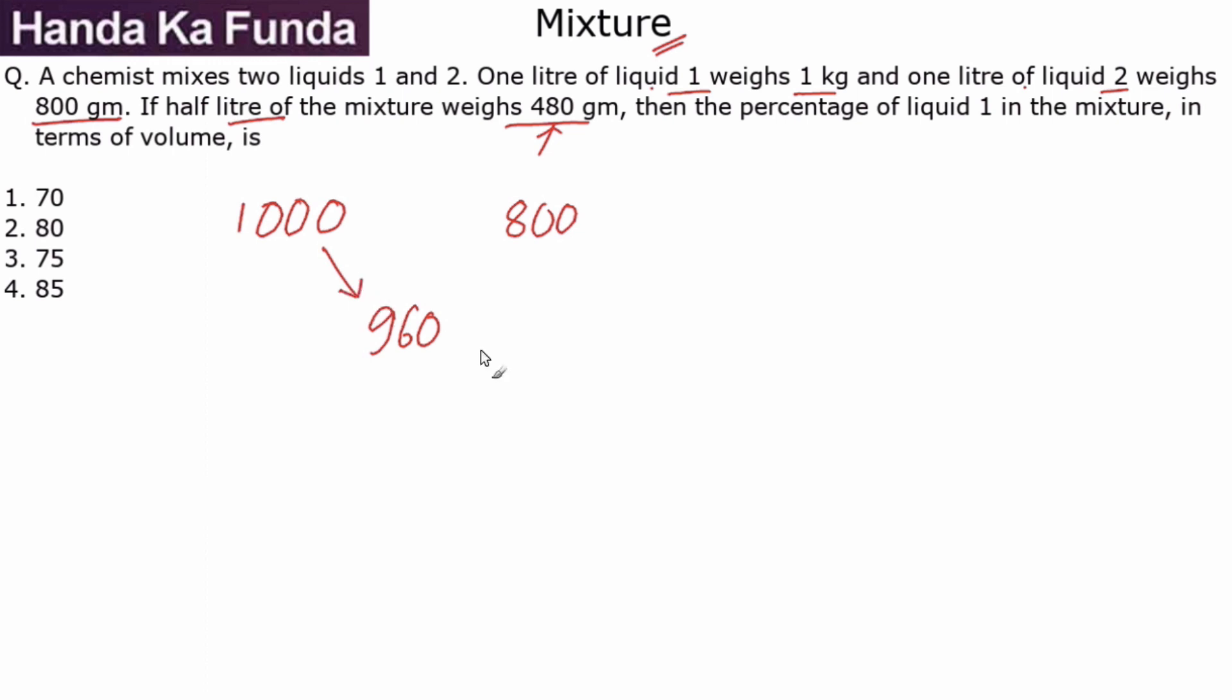1000 minus 960 is 40. 960 minus 800 will be 160. So they should be mixed in the ratio of 160 is to 40, or they should be mixed in the ratio of 4 is to 1.